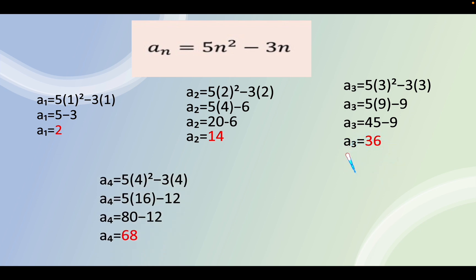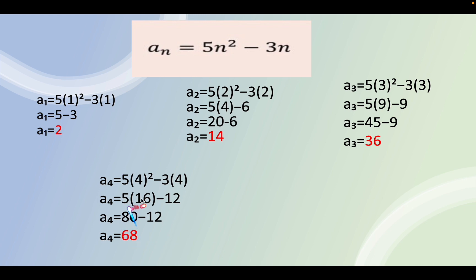For the fourth term, a sub 4 equals 5 times 4 squared minus 3 times 4. Since 4 squared is 16, and 3 times 4 is 12, we get a sub 4 equals 80 minus 12. The answer for the fourth term is 68.